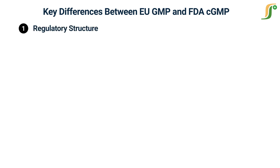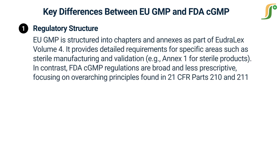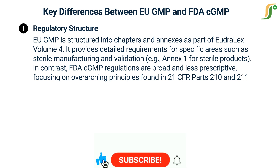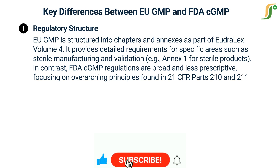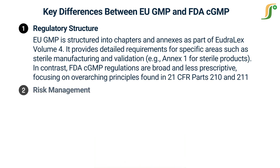Regarding guidance structure, EU GMP is structured into chapters and annexes as part of EudraLex Volume 4. It provides detailed requirements for specific areas such as sterile manufacturing and validation — for example, Annex 1 for sterile products. In contrast, FDA CGMP regulations are broader and less prescriptive, focusing on overarching principles found in 21 CFR Parts 210 and 211.